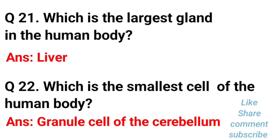Which is the largest gland in the human body? The answer is the liver. Which is the smallest cell of the human body? The smallest cell of the human body is the granule cell of the cerebellum.